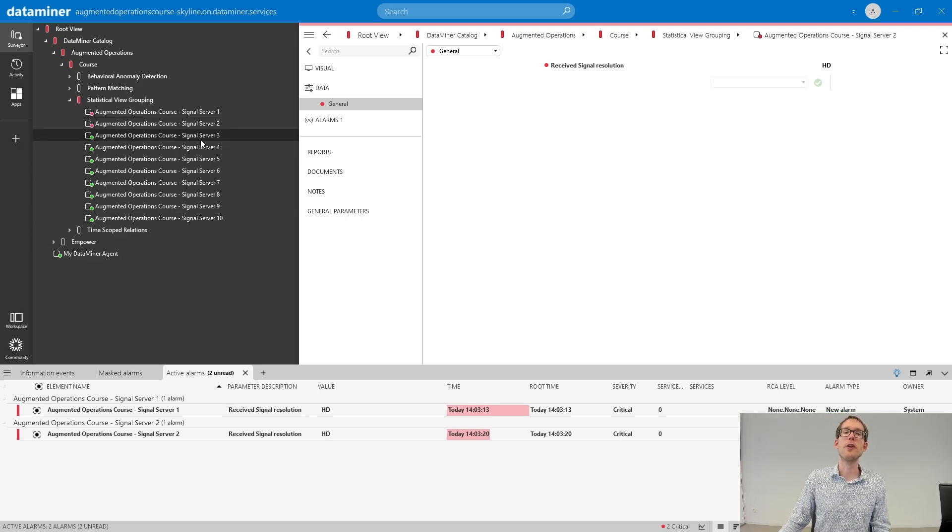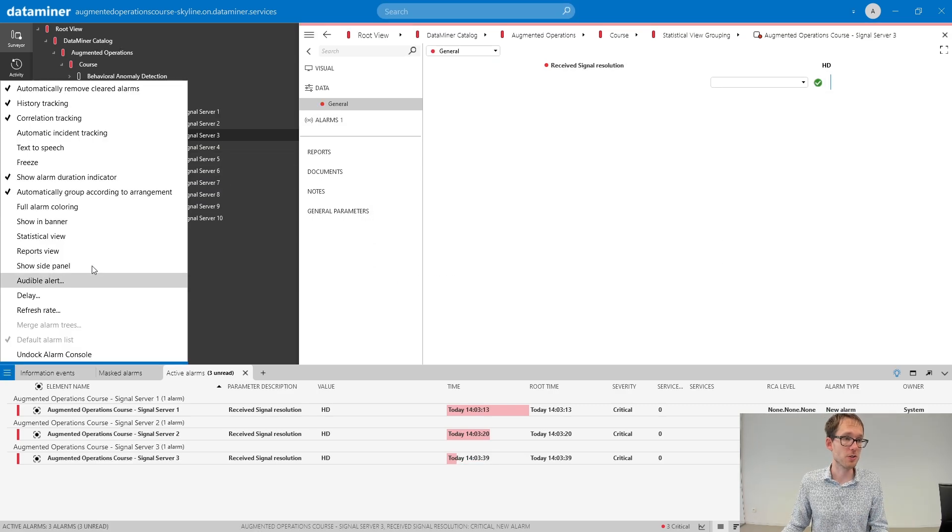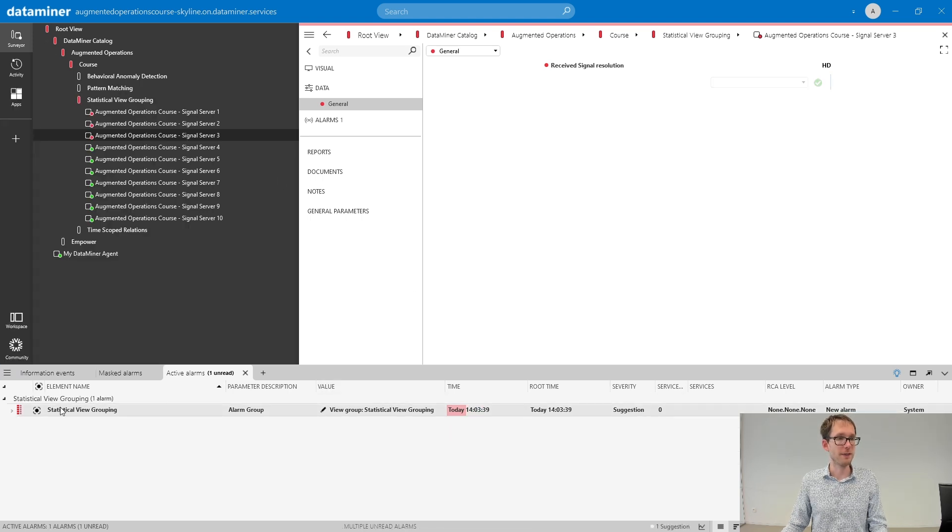Let's add an alarm on a third device. If I do that, then 30% of the devices under this view are in alarm. The threshold is set to 25%. So we should be able to group this. And indeed, you see the alarm grouping grouped those three alarms based on the fact that they belong to the same view called statistical view grouping. And that's indeed the name of this view.